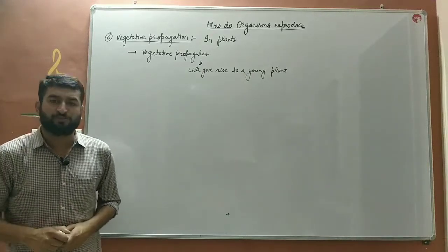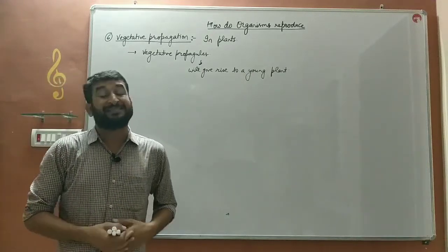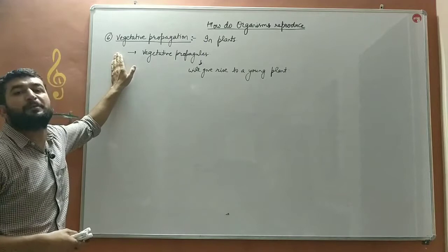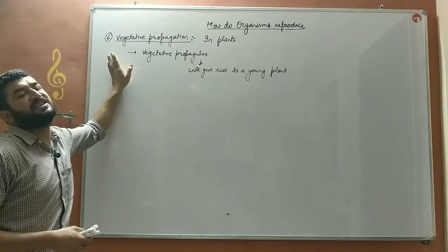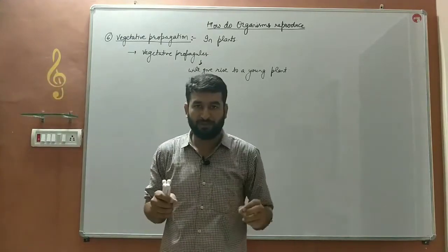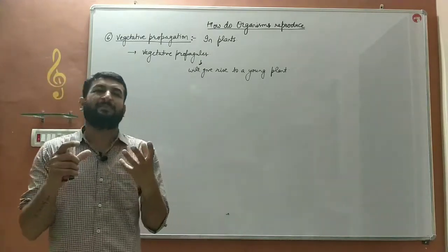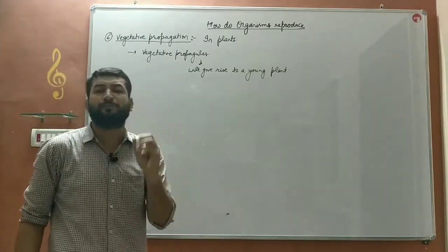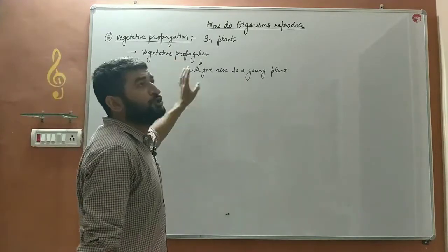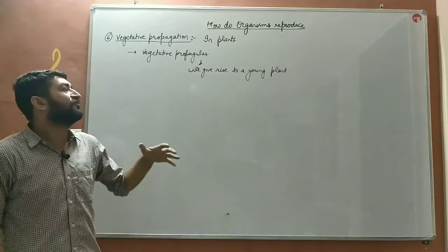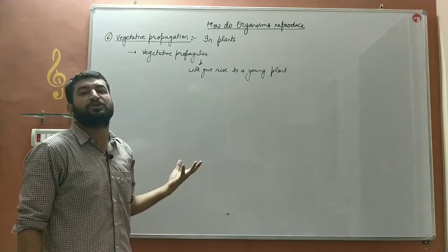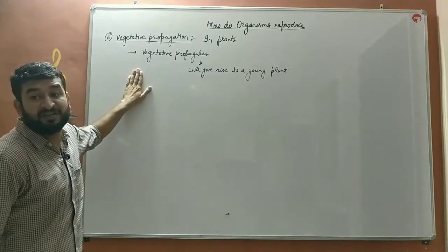In this video, we will discuss the next mode of asexual reproduction — the asexual mode of reproduction in plants named as vegetative propagation. Vegetative propagation occurs only in plants. It is a mode of asexual reproduction in which the old parent plant gives rise to certain reproductive units known as vegetative propagules, which have the capacity to give rise to a new individual without the formation of seeds.